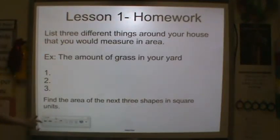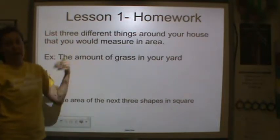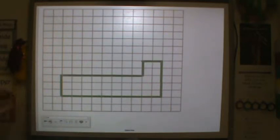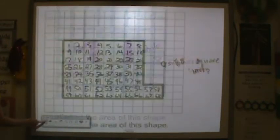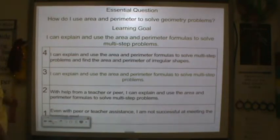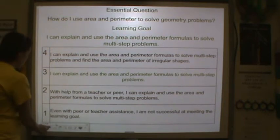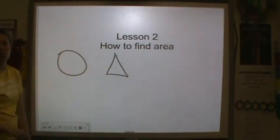So for homework tonight, you are to find examples of things around your house that you would measure in area. So an example would be the amount of grass in your yard, because that's on a flat space. It's the inside. So how much grass is in your yard, you'd measure that in area. Find me three more things that you'd measure in area. And find the area of the next three shapes in square units. And I will show them to you, and you can pause as you need. There's the first shape. Find the area. Second shape. Find the area. These should be looking familiar. And third shape. Find the area. And when you're all done, I would like you to go back to the learning goal. And I would like you to tell me where you're at at the end of the lesson and put a triangle around it. So are you a four, a three, a two, or a one? And then put a triangle around where you're at on the learning goal after you saw lesson two. Thank you so much for the hard work, and I will see you tomorrow.